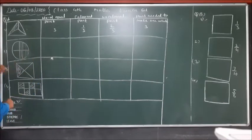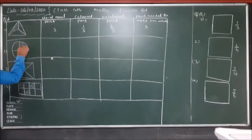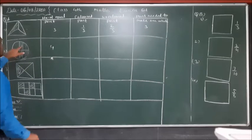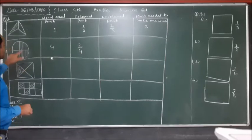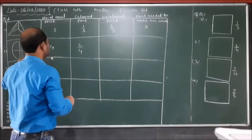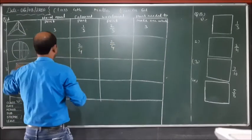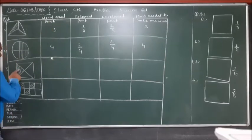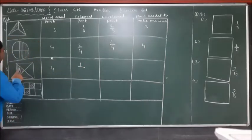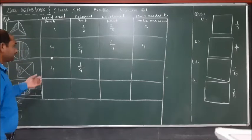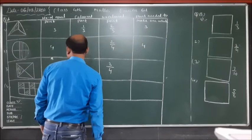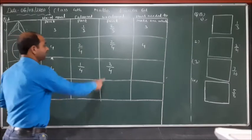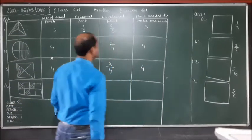For the second shape: there are one, two, three, four — four equal parts. Two parts are colored, so the colored fraction is two upon four. The uncolored part is also two upon four. Four equal parts are needed to make a whole. For the third shape: four equal parts, one is colored, so we write one upon four. Three parts are uncolored, so three upon four. Four parts are needed to make a whole.